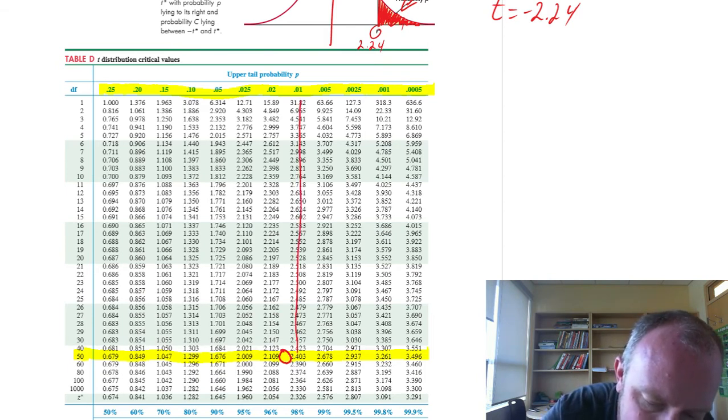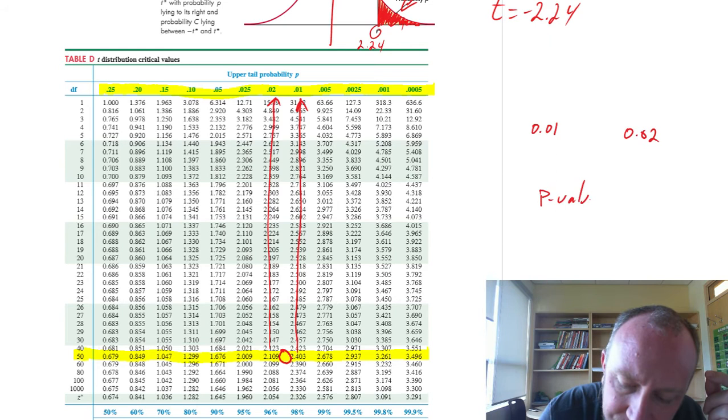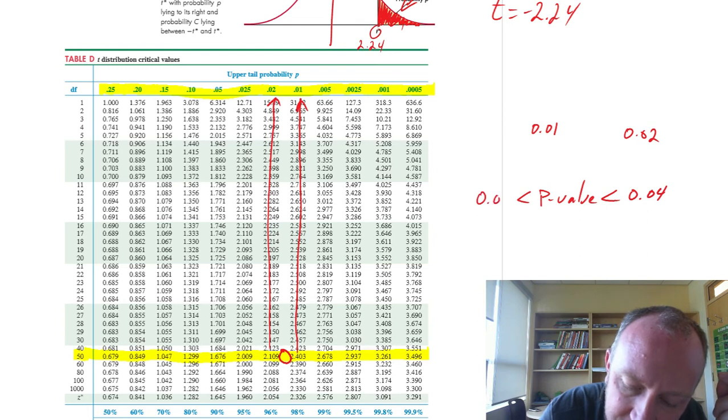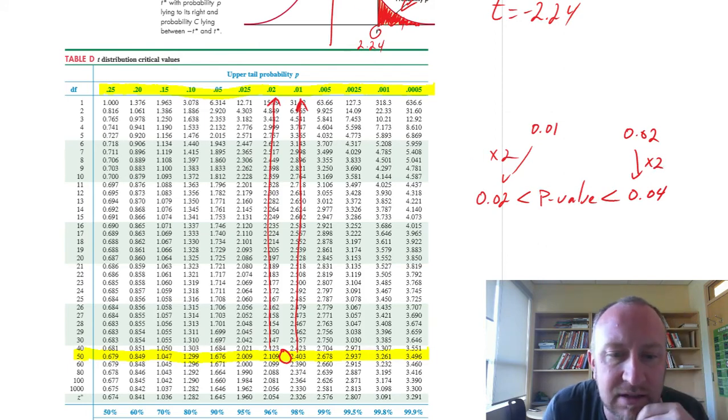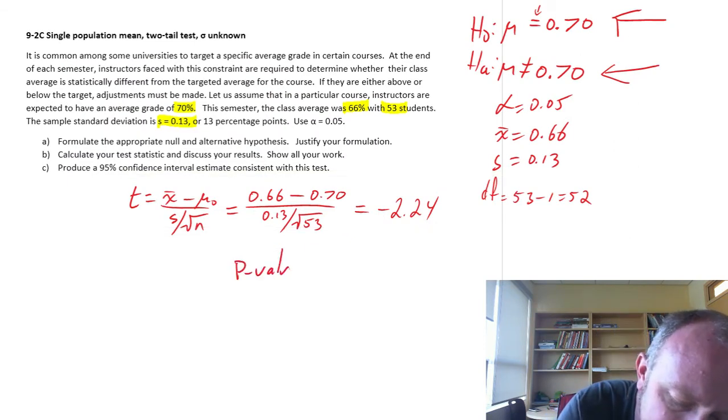So coming back down, 2.24 is in between these two values here. So my probability of interest is between 0.01 and 0.02. But because this is a two-tailed test, I need to double those. So my p-value is going to be something less than 0.04, something greater than 0.02. So it's this value times 2, this value times 2. So let's go back to our problem. My p-value for this test is less than 0.04, greater than 0.02.